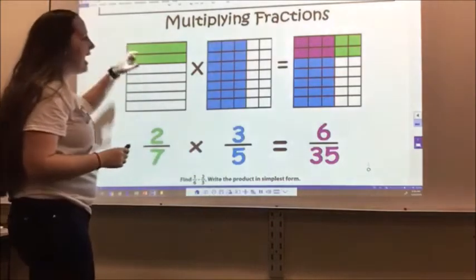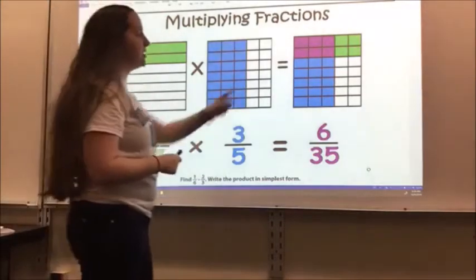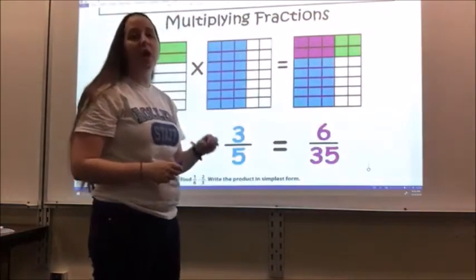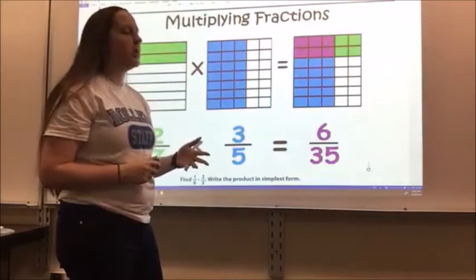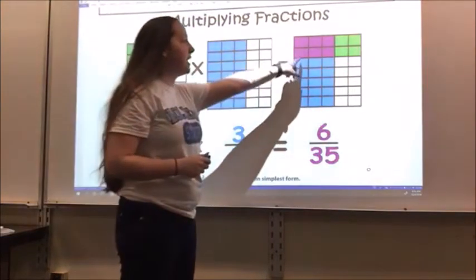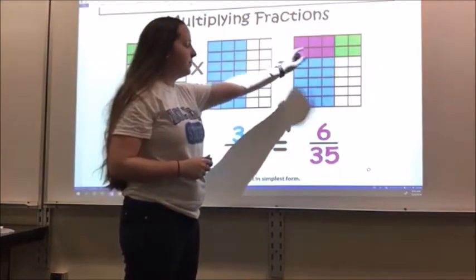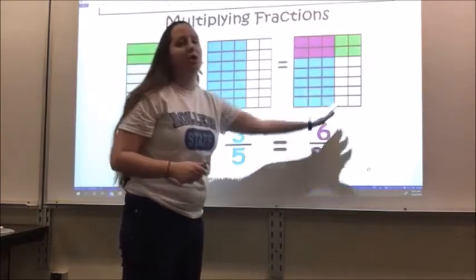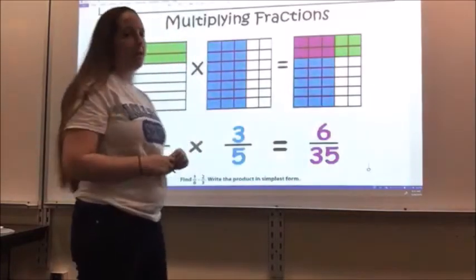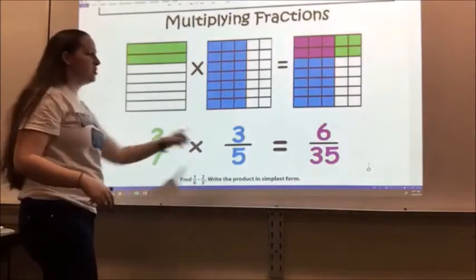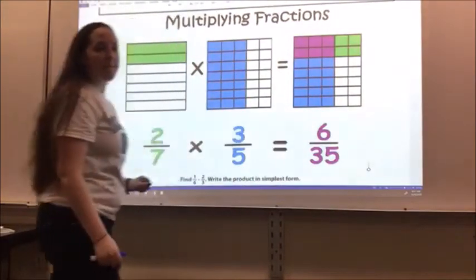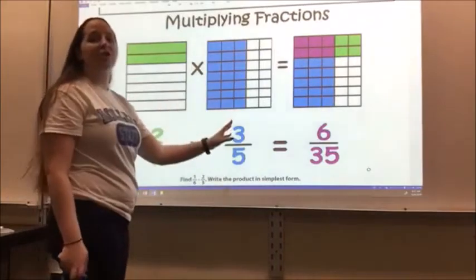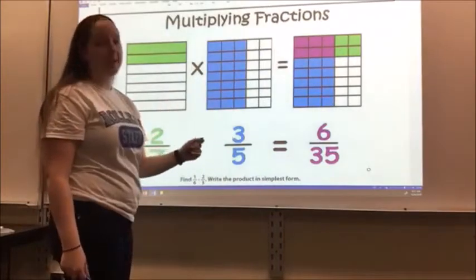The part where they overlap is colored purple, and that overlap is what your new fraction is going to be — that's 6. There are 35 total squares, which is how I got the 35. So you're still multiplying: 2 times 3 gives you 6, and 7 times 5 gives you 35. This is just a visual representation of doing that.